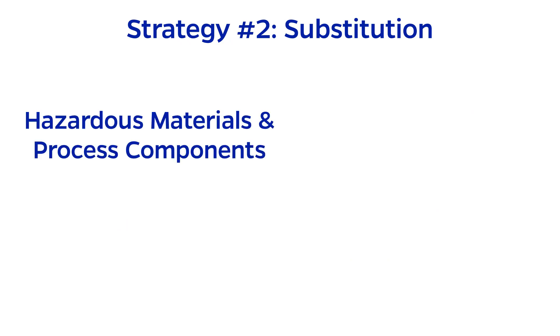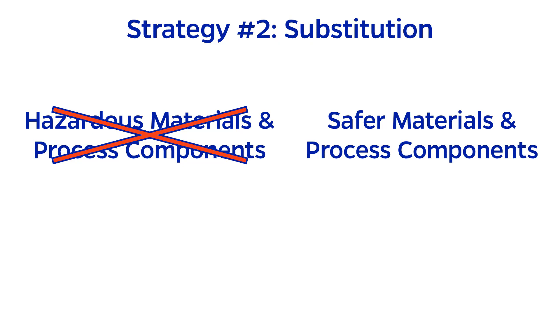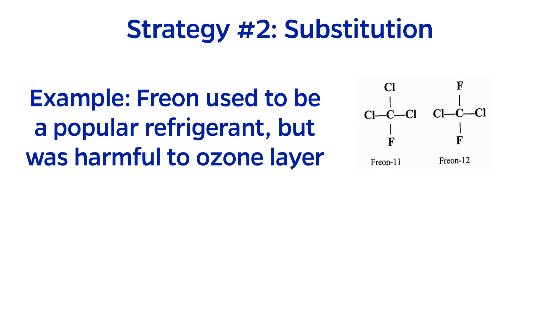The second strategy is substitution. This is about replacing hazardous materials or process components with safer ones. For example, a chemical mixture of chlorofluorocarbons called Freon used to be a very popular refrigerant. Only problem was that it was very harmful to the ozone layer if it got released.